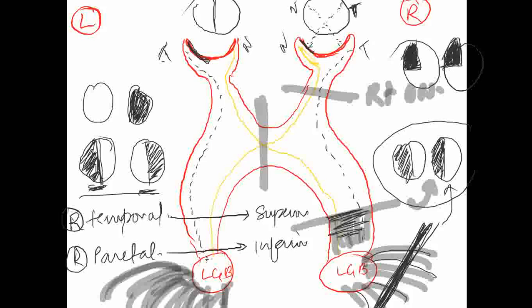Now the last lesion will be at the cortex. The lesion at the cortex will be similar to that of the optic tract, but there will be macular sparing — one dot will be spared. Macular sparing is a characteristic of lesion to the cortex. Why it happens is not known.